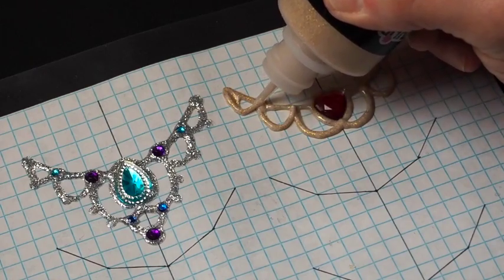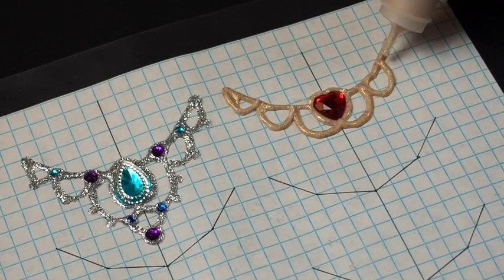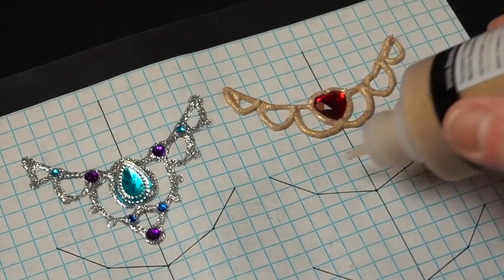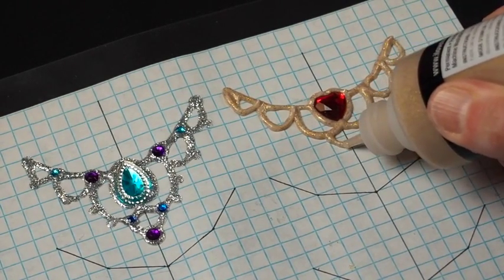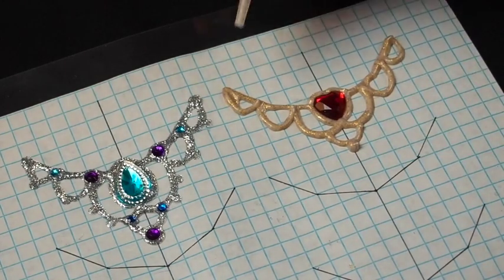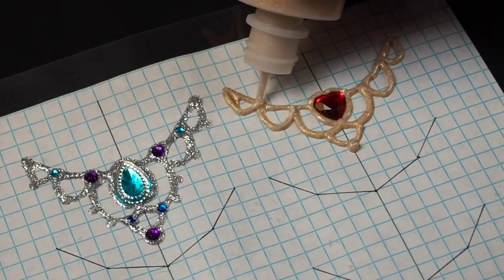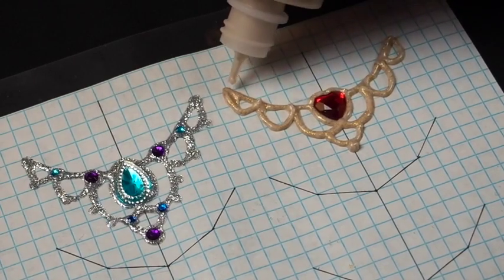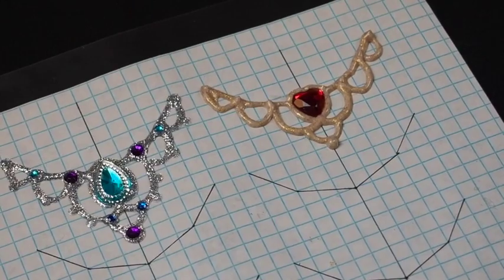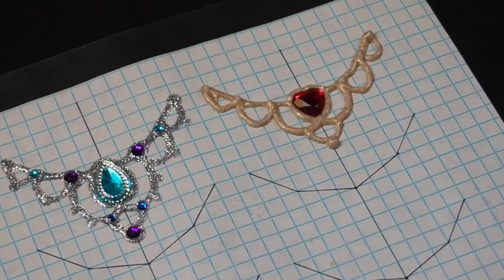Then I'll add one final loop on the bottom. I'm going to add a little extra there. Any place I'm planning to put a gem, if it's a larger gem, I'm going to add just a little bit extra. Now I'm going to put down my gems. These are a little larger than the gems that I like to normally use, but I think that they'll still look really nice in this.